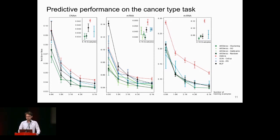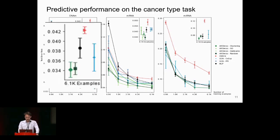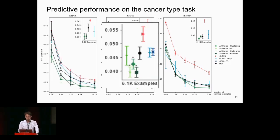For methylation data, AttOmics can perform better or similarly to other deep learning architectures such as MLP or GNN, with no impact from grouping strategy — random and clustering approaches perform similarly. For gene expression data, AttOmics performs better or similarly to other deep learning architectures. Looking at grouping strategies, we can see an impact: random and gene ontology are the best performers with lower error rate, while clustering has a slightly higher error rate.